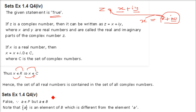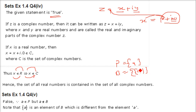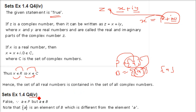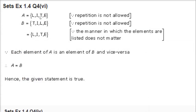Fifth: set P = {a} and set B = {{a}}. Here P has element a, but B has an element which is itself a set {a}. They are entirely different — both are not equal. This is false.